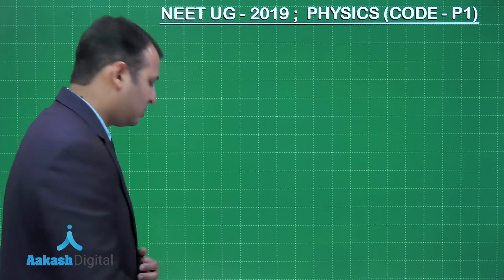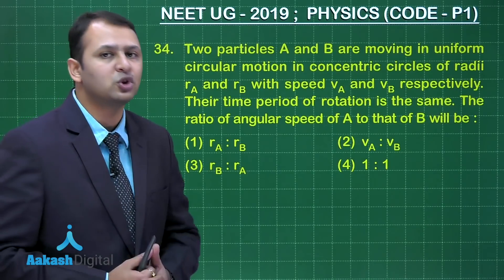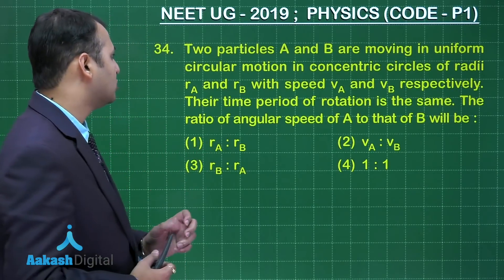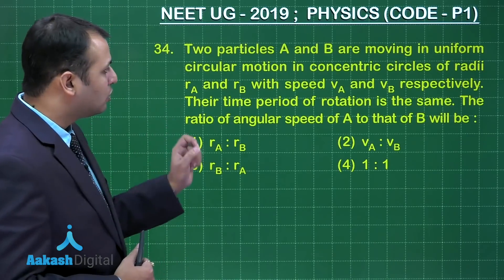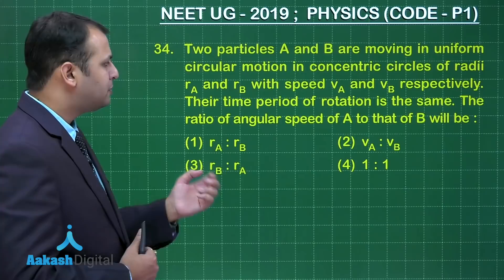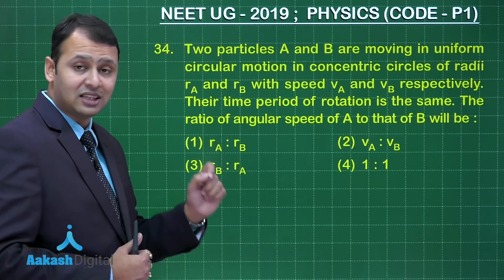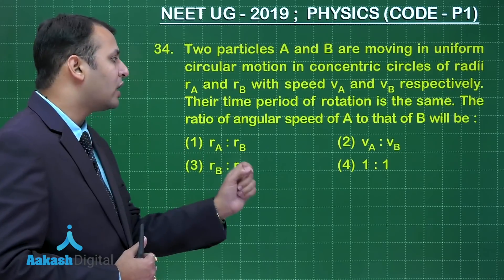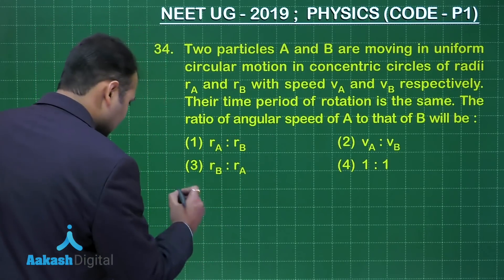Let's take our next question, that is question number 34. This question belongs to chapter motion in a plane from the topic circular motion. Two particles A and B are moving in uniform circular motion in concentric circles of radii RA and RB with speed VA and VB respectively. Their time period of rotation is the same. The ratio of angular speed of A to that of B will be?